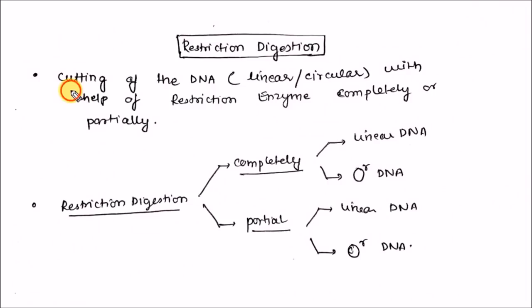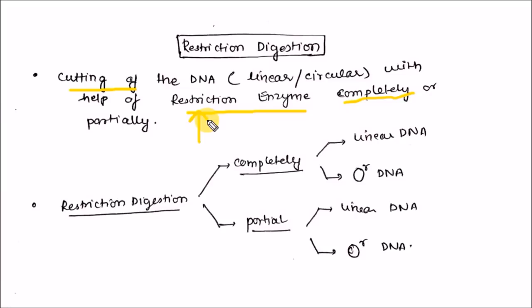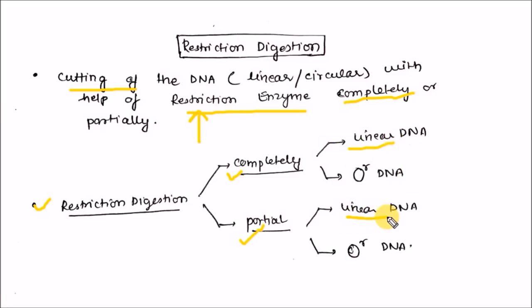Restriction digestion is a cutting of linear or circular DNA with the help of restriction enzyme, completely or partially. Restriction enzymes are the enzymes which cut the DNA at very specific sites. Restriction digestion can be divided into two parts: complete digestion or partial digestion, each applicable to linear DNA or circular DNA.